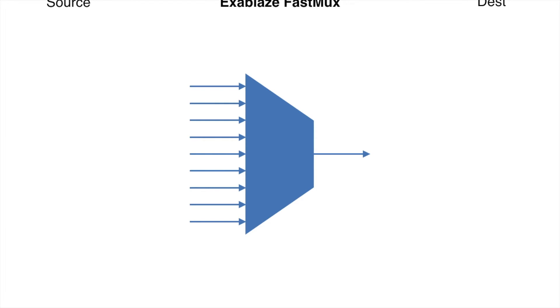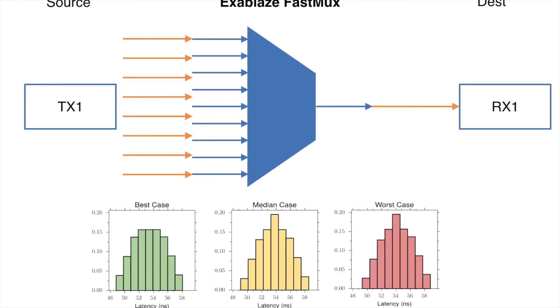So we've applied this measurement methodology to our Exablaze FastMux. We've taken our timestamp in the transmit and timestamp in receive, subtracted out the errors, and calculated delays through the device. In fact, what we've done is applied this to many different inputs, and then formed a characterization curve of all of the different inputs so that you can get a sense of what the best, median, and worst-case performance is through this device.